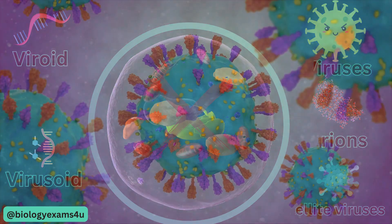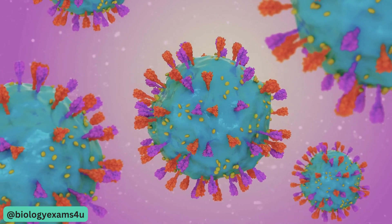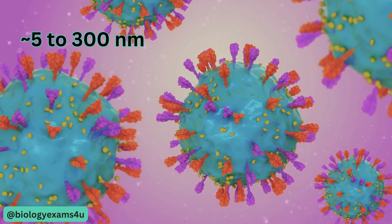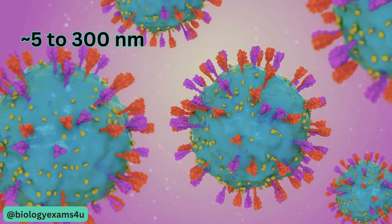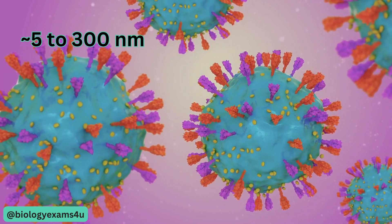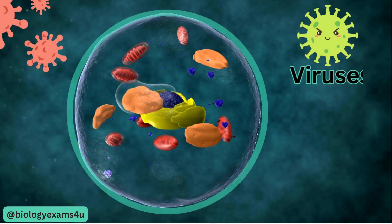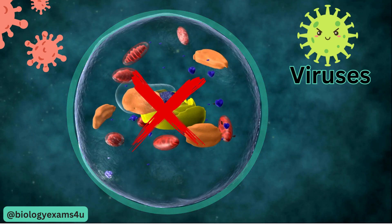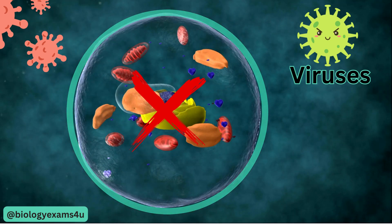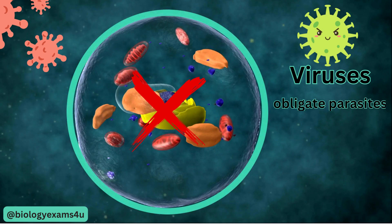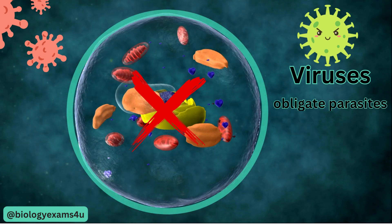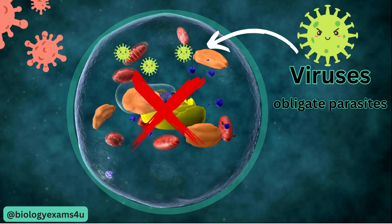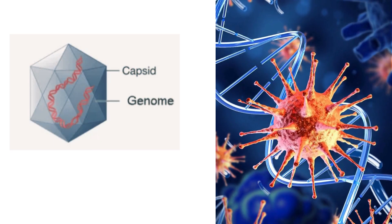Viruses are incredibly small particles, ranging in size from 5 to 300 nanometers, typically much smaller than bacteria. They lack many key features of a cell like a cell membrane, cytoplasm, nucleus, or other membrane-bound organelles. They are strict parasites that can only replicate inside living cells by hijacking the host cellular machinery.